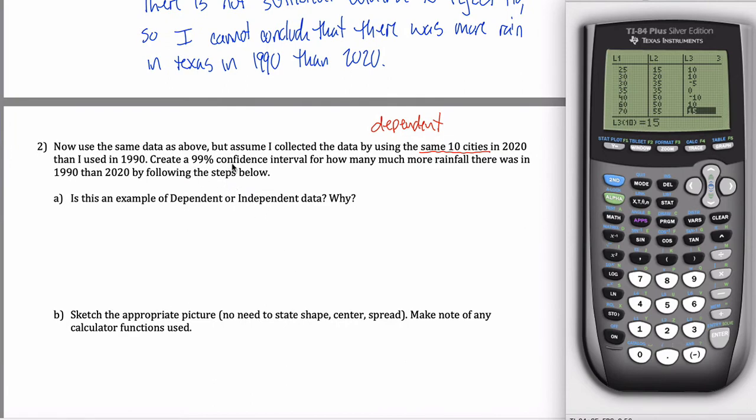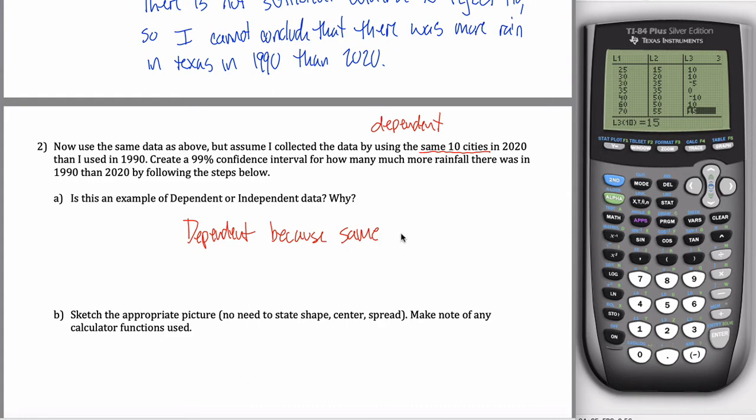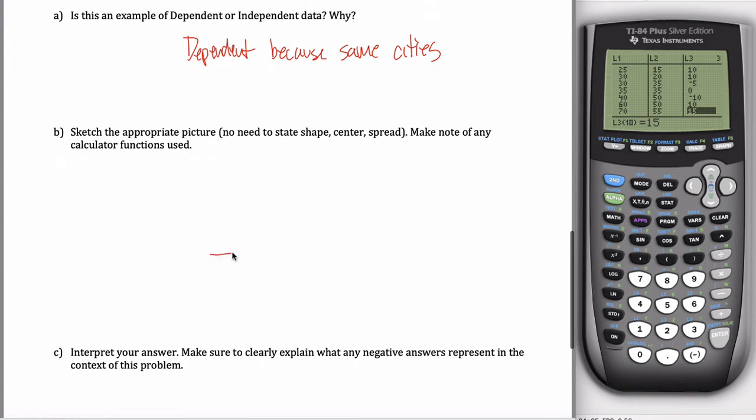So now I want to make a 99% confidence interval for how much more rain there was in 1990. So is it dependent or independent? Now it's dependent, as I kind of wrote up here, so I probably didn't need to repeat. And it's because it's the same cities. Let's get to the appropriate picture.